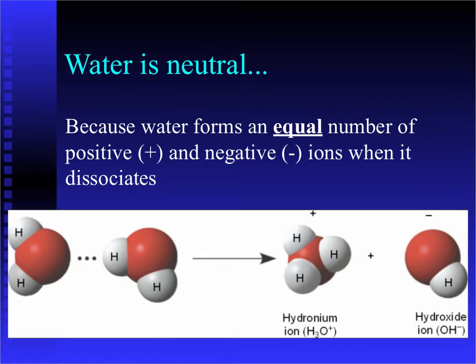So when water breaks apart and it forms that positively charged hydronium ion and that negatively charged hydroxide ion, that's important because even though now you have two ions, a positive and a negatively charged ion, they are there in equal numbers. And so that means that when water has its pH tested, it ends up having a neutral pH because the number of positive ions equals the number of negative ions.